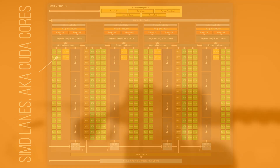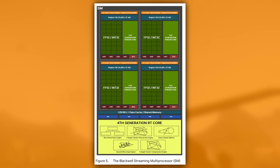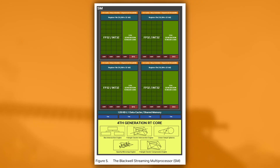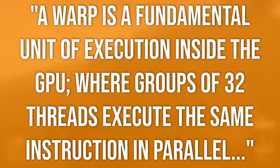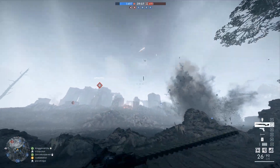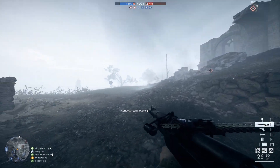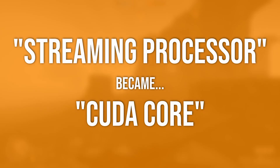Each streaming multiprocessor, or SM, has a differing warp count depending on the actual architecture in use on the specific card. However, each warp has consistently maintained the ability to process up to 32 integers or single floats at a time. In fact, the NVIDIA marketing machine literally says that a warp is a fundamental unit of execution inside the GPU, where groups of 32 threads execute the same instruction in parallel. Two years after the first announcement of the CUDA API, NVIDIA officially changed the name of each SIMD lane from a streaming processor to a CUDA core.